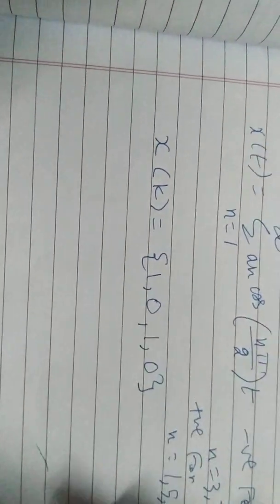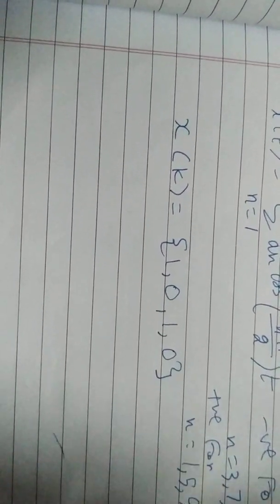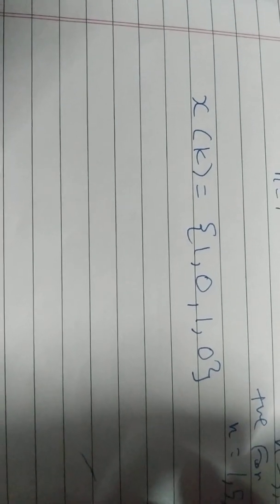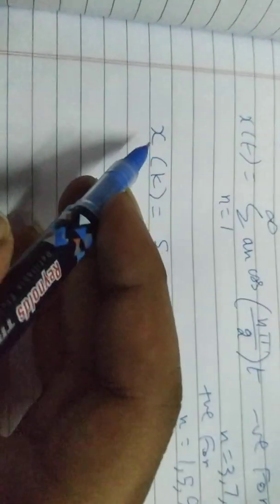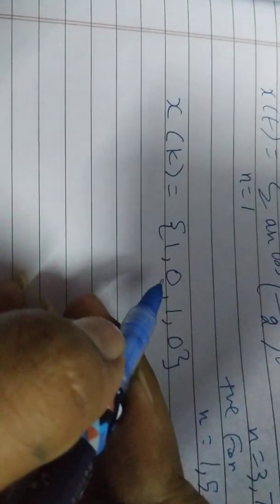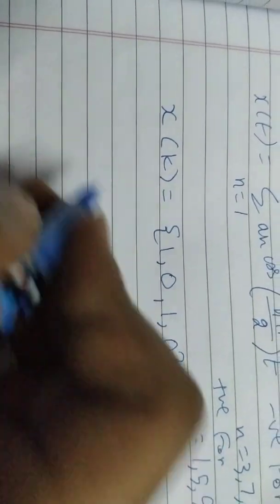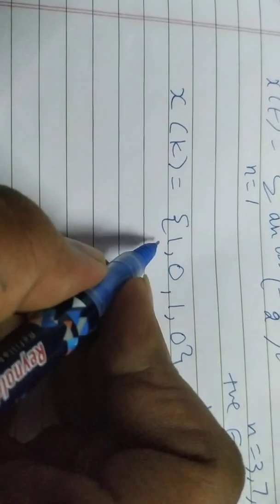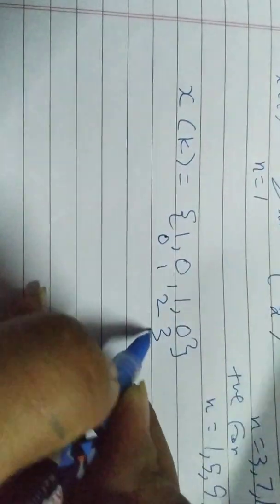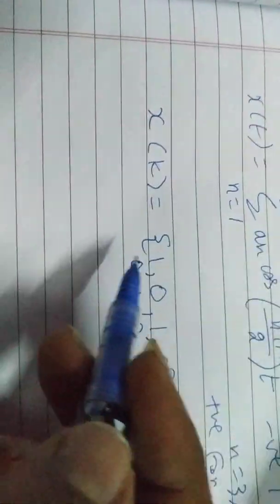Hey guys, it's me, and I'm here to do a video for my channel on how to find the inverse discrete Fourier transform of a given sequence. For example, the given sequence x of k is equal to 1, 0, 1, 0, where k goes 0, 1, 2, 3.